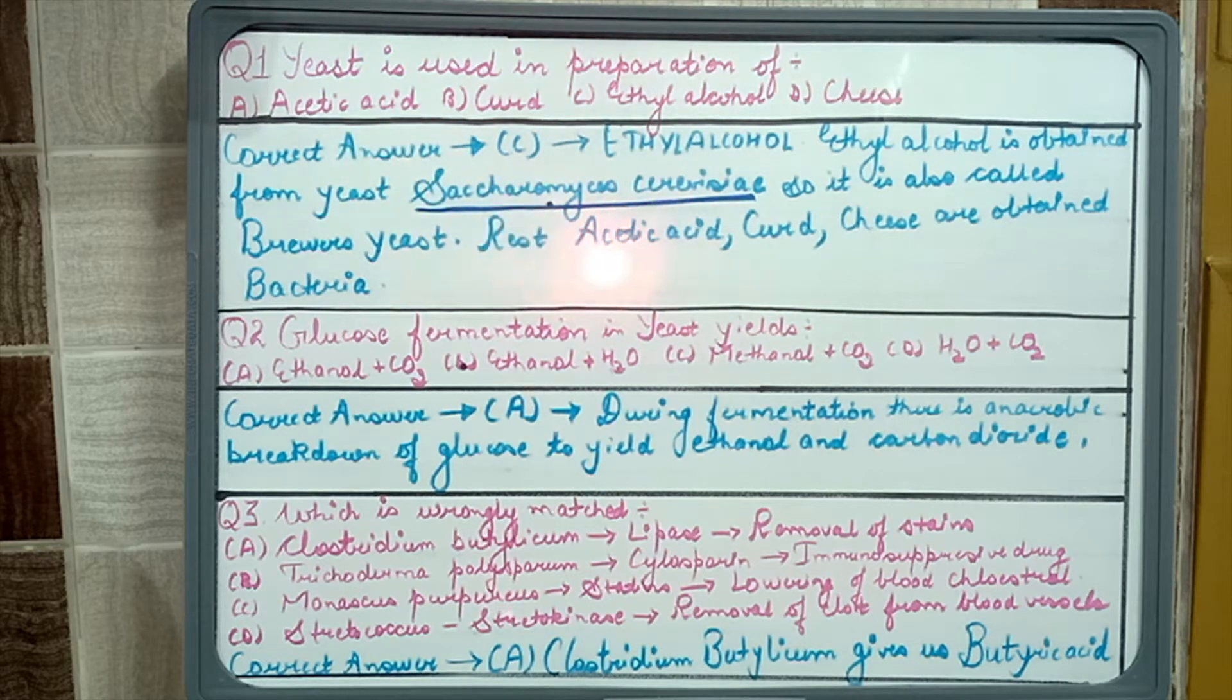So Saccharomyces cerevisiae is brewer's yeast because it helps in preparation of ethyl alcohol and it is baker's yeast because it helps in preparation of bread.